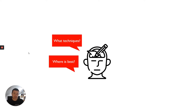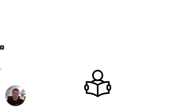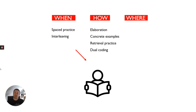This video will go through the main things every student needs to know about revision. I'm going to talk about where is best, what techniques to use, when to start, what to revise and how often — summarised as when, how and where. For when, we'll look at spaced practice and interleaving. For how, elaboration using concrete examples, retrieval practice, and dual coding. And where: calm, neutral and clutter-free, which we covered in my previous video on organising yourself.